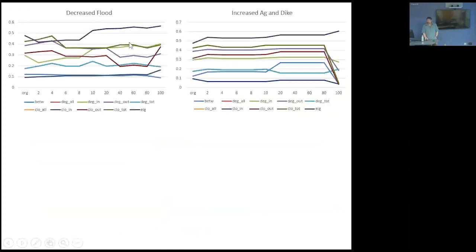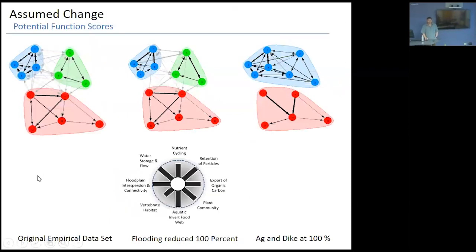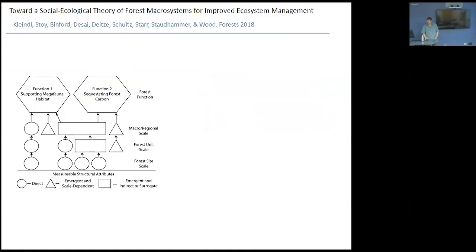Something very interesting occurs around 90% diking — the system collapses in some way — but that's not really informative across gradients. I believe there's depth in this well, but I set it aside for now. I've since expanded the dataset to include the last several years of NAIP imagery and I'm working with a mathematician to do some matrix algebra — that's coming up soon.